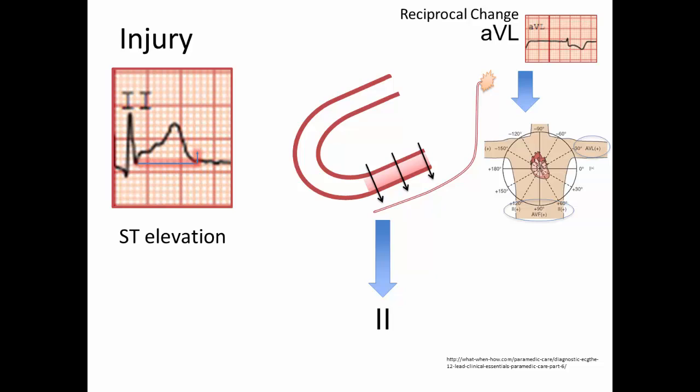To diagnose a posterior STEMI, leads V7 through V9 can be placed on the posterior thorax around the scapula to demonstrate ST elevations. However, if you see ST elevations everywhere, this implies a global injury, as in an inflammatory process like myopericarditis. Injury is manifest as ST elevation.